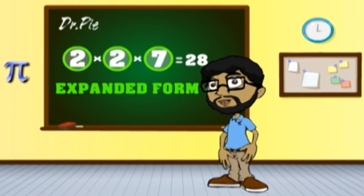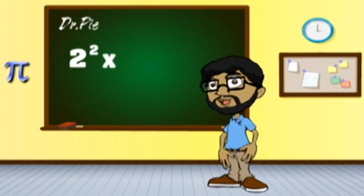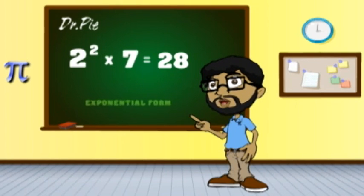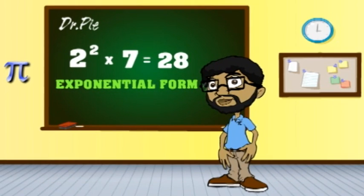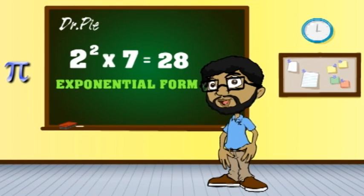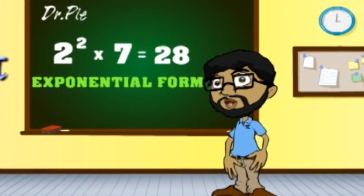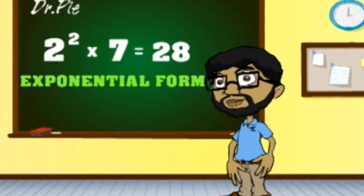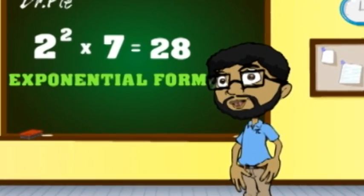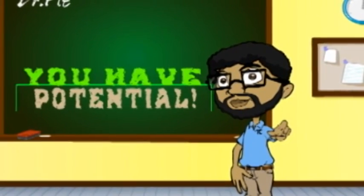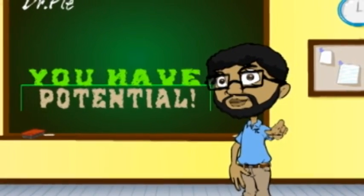2 squared times 7 is called exponential. You would do it great cause you have potential.